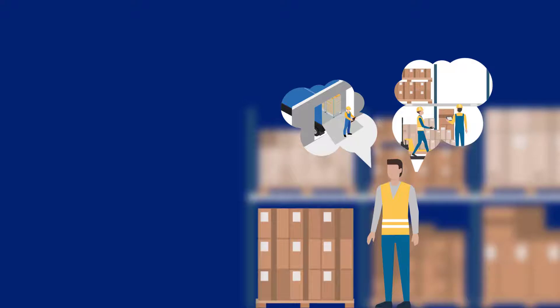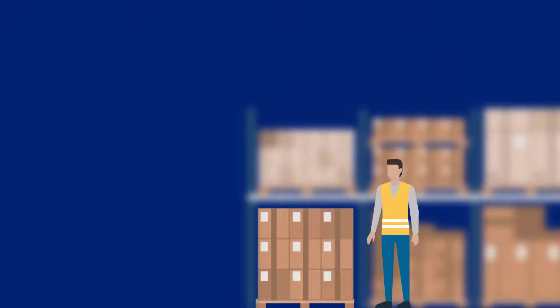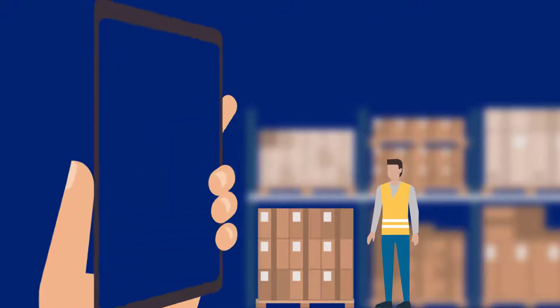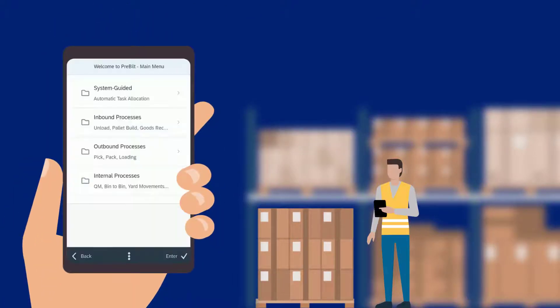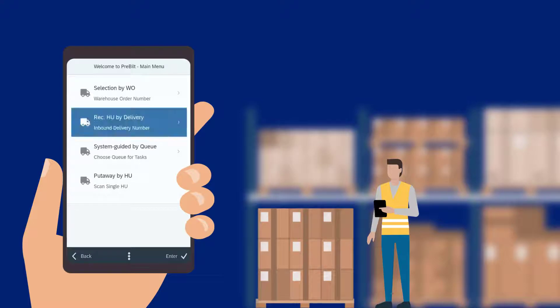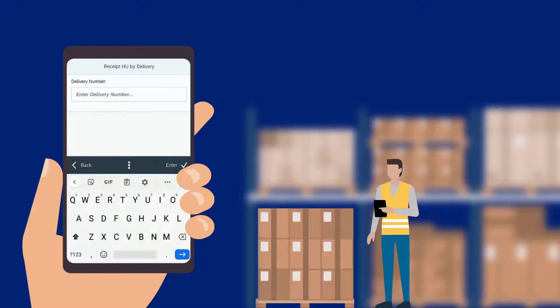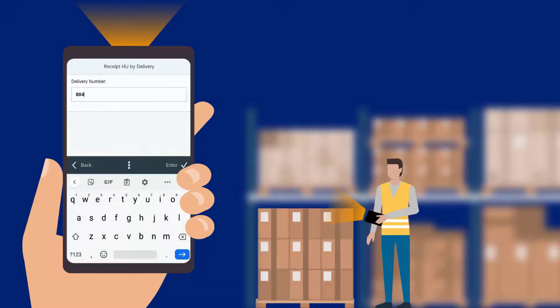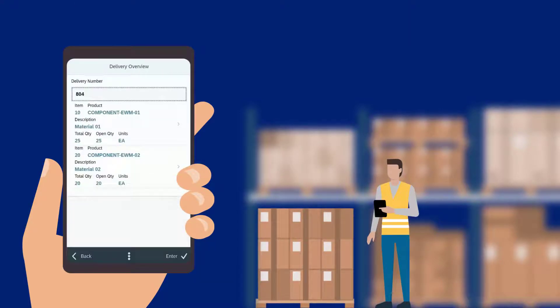The goods receipt process is started by opening the pre-built EWM menu and selecting inbound processes. The operator then selects the option receive HU and scans the inbound delivery number on the received order.